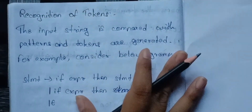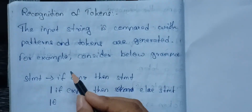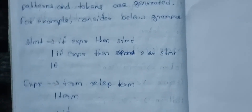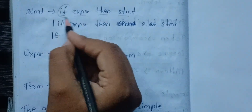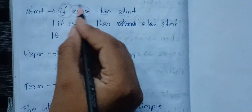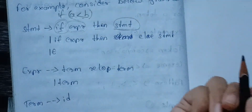We will check patterns and tokens and compare them. Let's consider the following grammar. A statement is named if-expression then statement. For example, if a is less than b, then true — so if a less than b is true, then the statement executes.